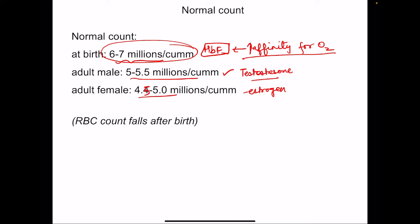Hemoglobin F is present in the uterus and at birth because its increased affinity is useful for carrying oxygen from the maternal blood to the fetal blood. However, since it releases less oxygen into the tissues, compensation is brought about by increased RBCs due to hypoxia, which increases synthesis of RBCs. So at birth, RBC count is much more compared to that in adults.